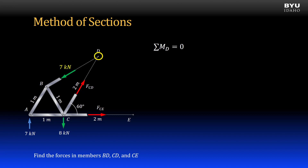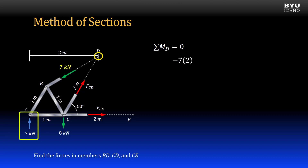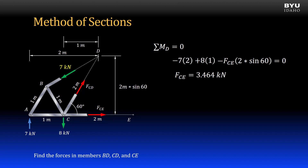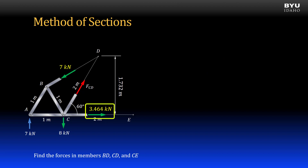Now I will sum moments about point D. I have the 7 kN reaction force times its moment arm from point D of two meters — negative by our convention. I have the 8 kN applied force times its moment arm of one meter — positive by our convention. And I have force CE, whose moment arm is equal to two meters times the sine of the member angle, 60 degrees, since it is an equilateral triangle — negative by our convention. All equal to zero. Solving, I get CE equal to positive 3.464 kN, so the member is in tension. I revise my free body diagram with force CE.